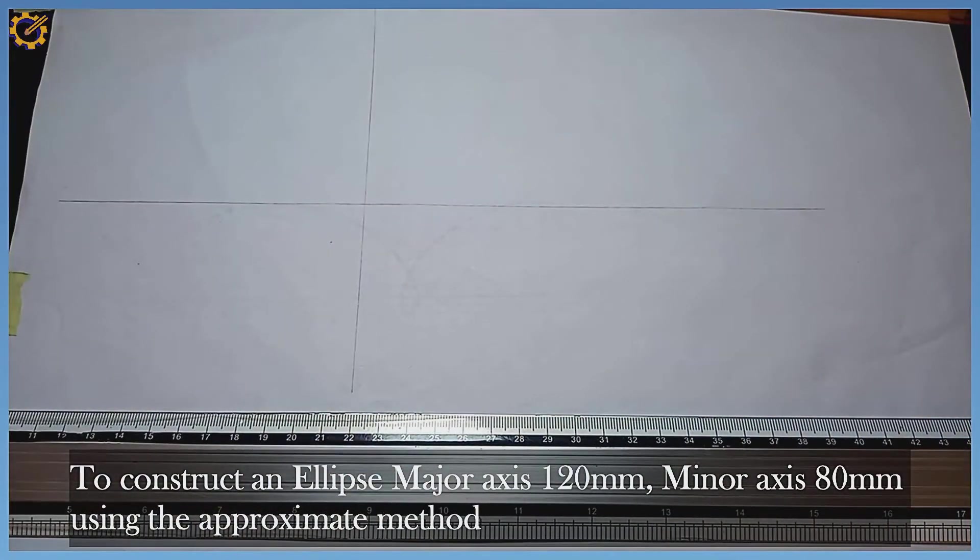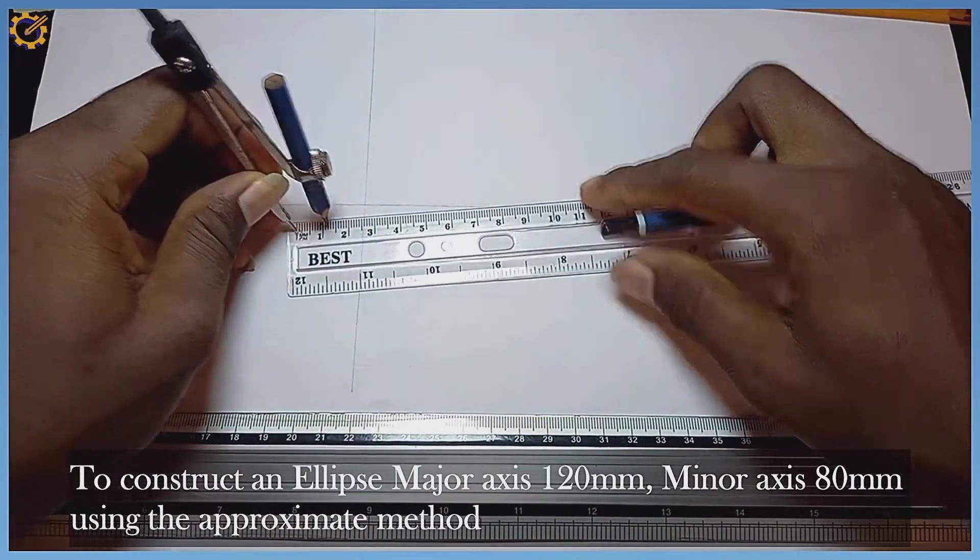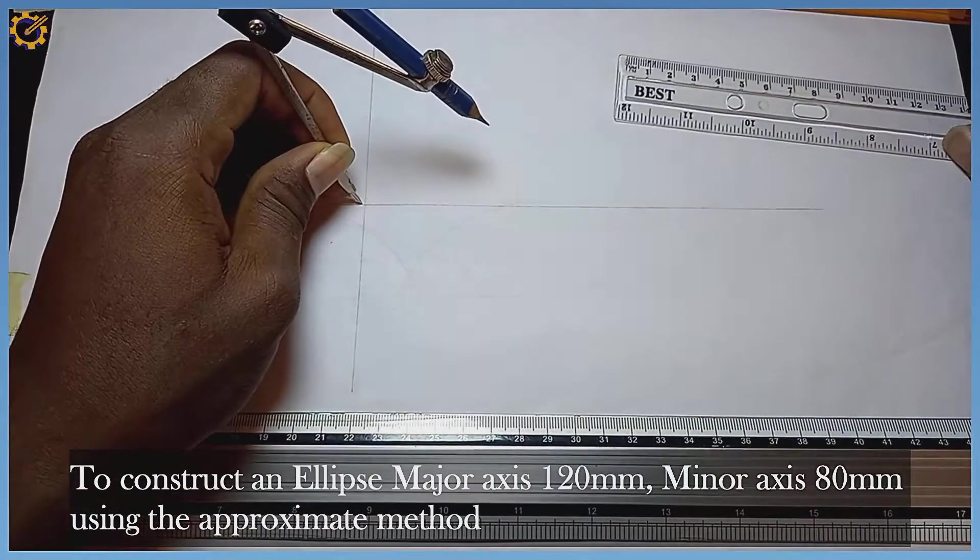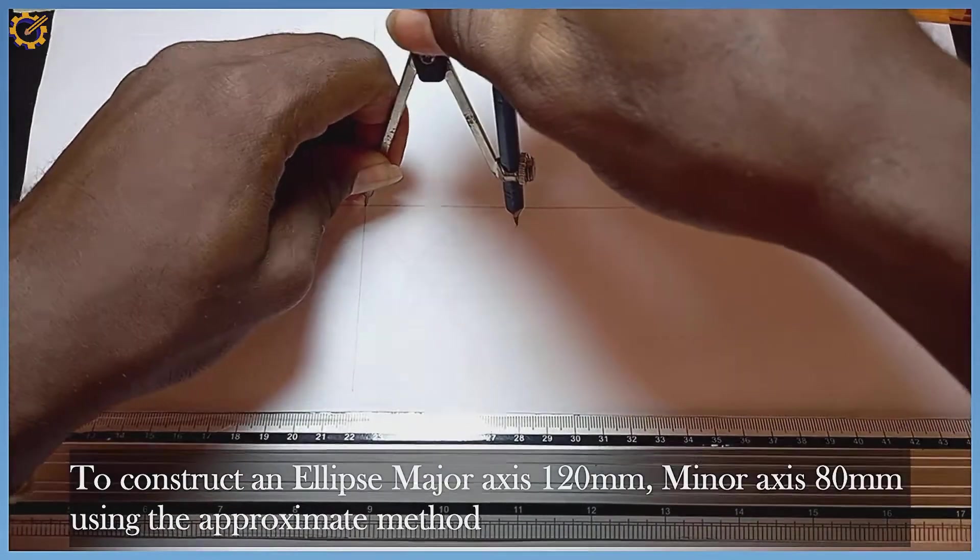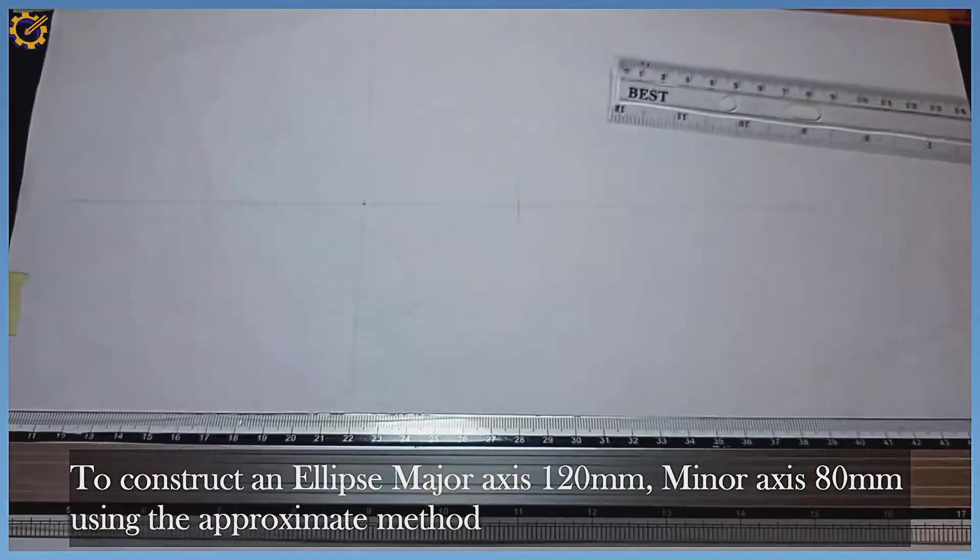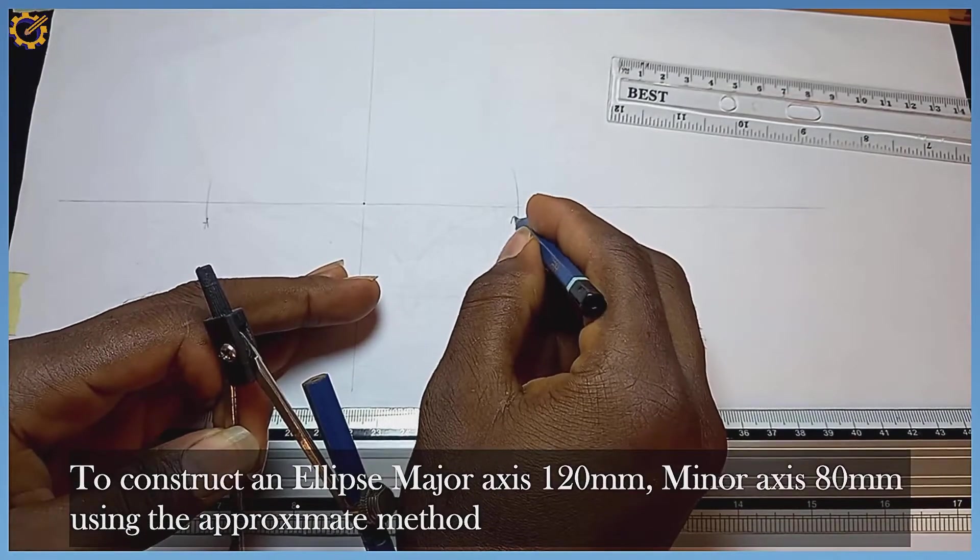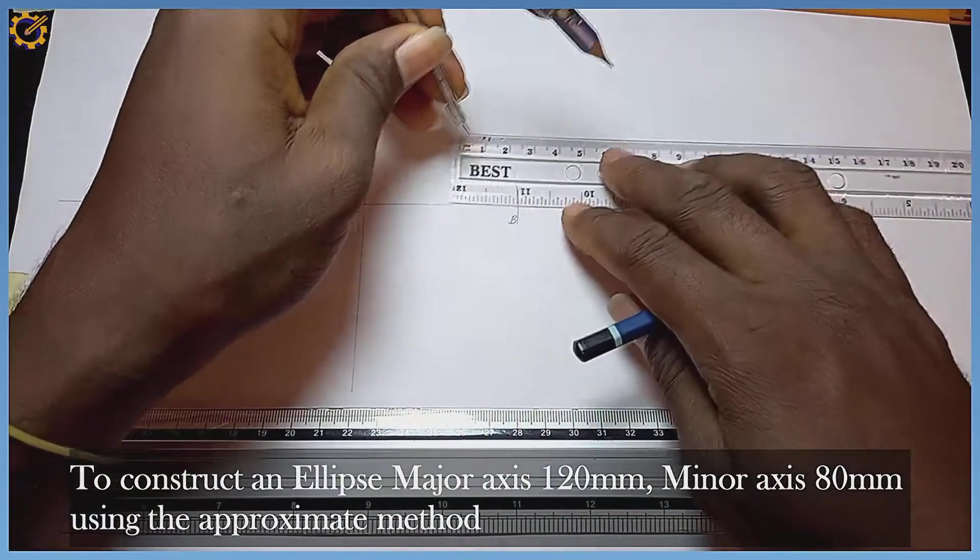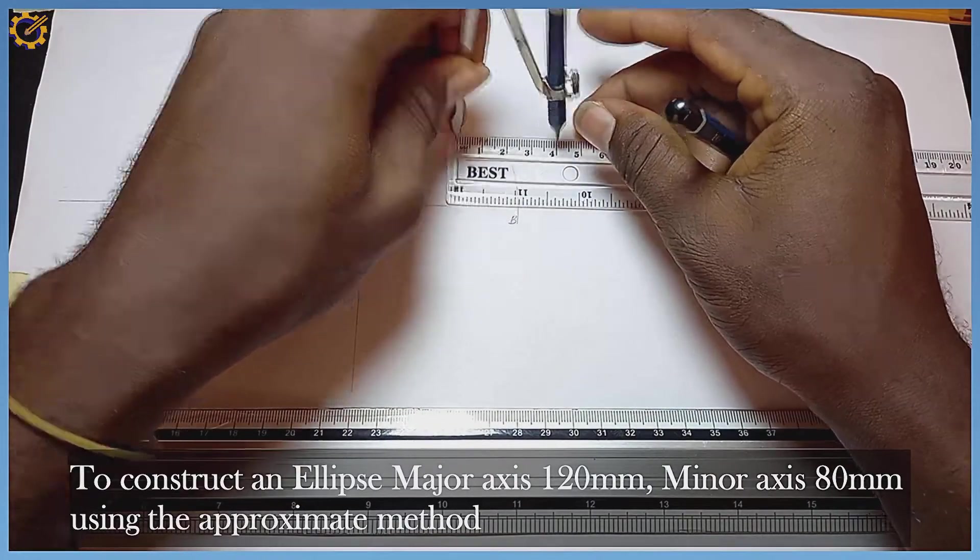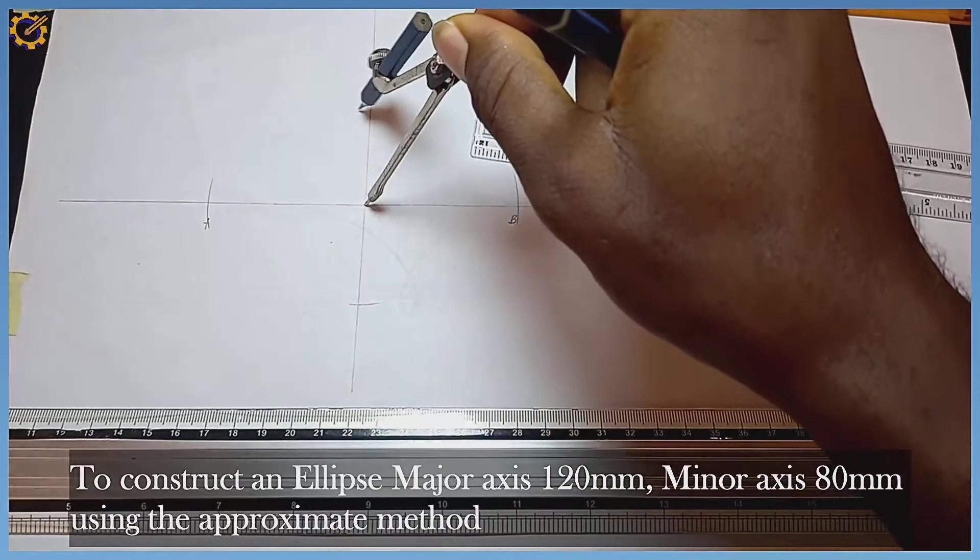Picking my compass, our major diameter is 120, so I'm picking 60 from here. Standing at this midpoint, I strike a mark left and right - mark A and mark B. Our minor diameter is 80 millimeters, so I'm picking 40. Standing right here, I mark up and down - mark C and D.